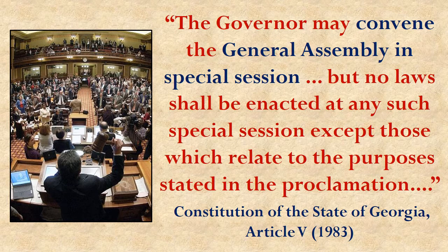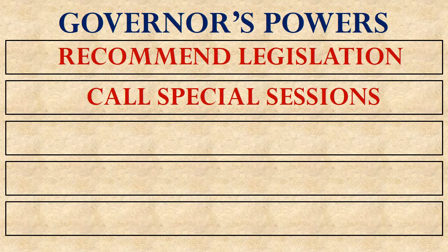The next power given is that the governor can call the General Assembly into special session. We mentioned this when talking about the United States Congress, because the president has a similar power. Here in Georgia, the legislature can only serve 40 days out of every year, so if some issue comes up that needs to be addressed by legislation, the governor can call the legislators back for a temporary period to deal with that problem. That's his seventh power: to call special sessions of the General Assembly.